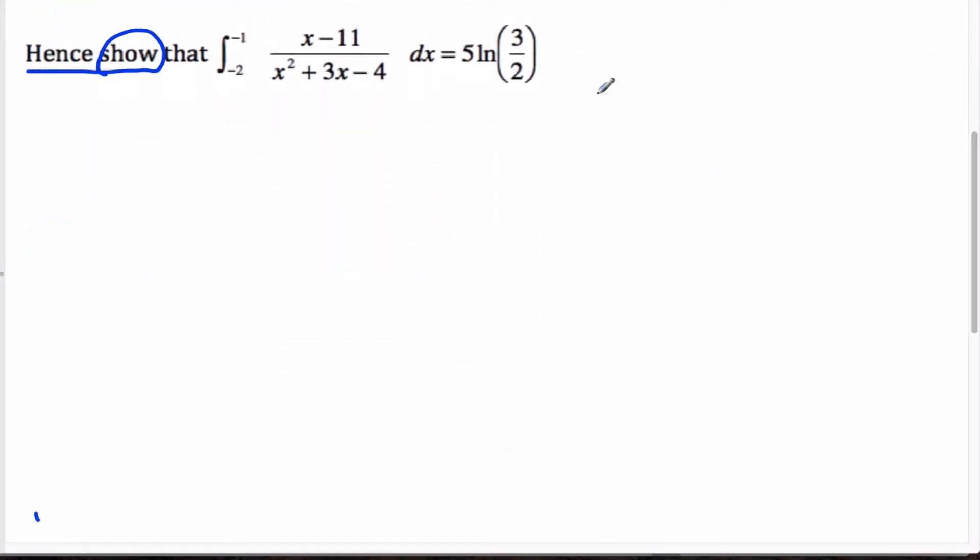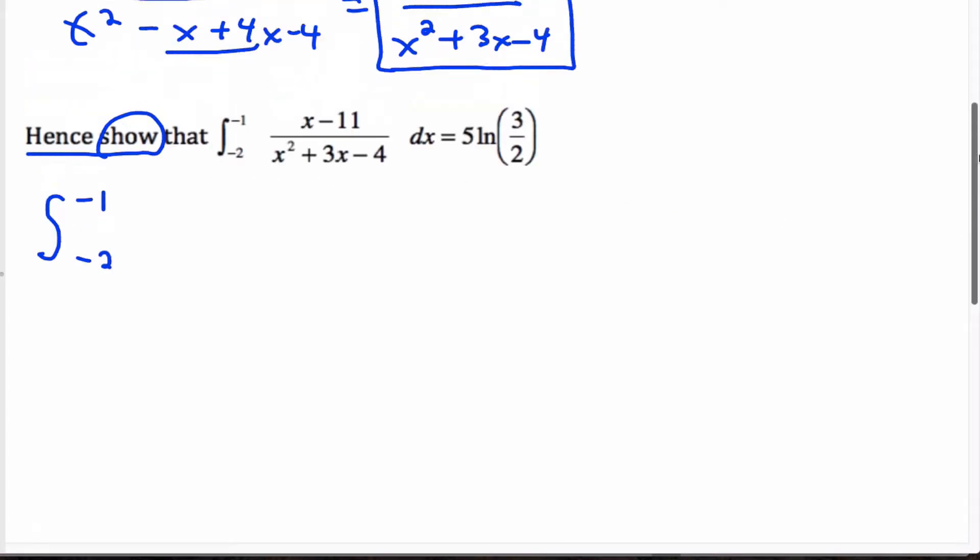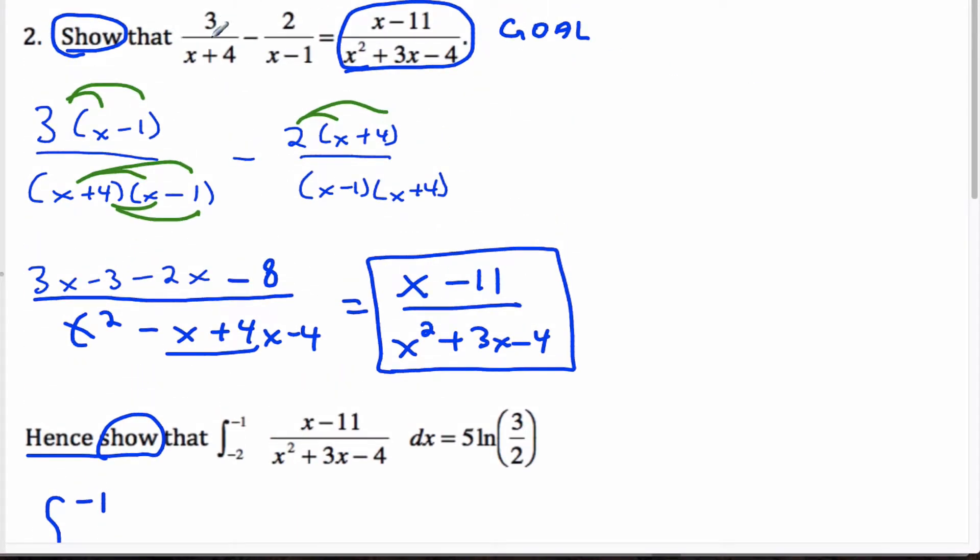So since that is accomplished, again, we can use the result, and we are going to integrate from negative 2 to negative 1. But now we can do this much simpler: 3 over x plus 4, subtract 2 over x minus 1 with respect to x.